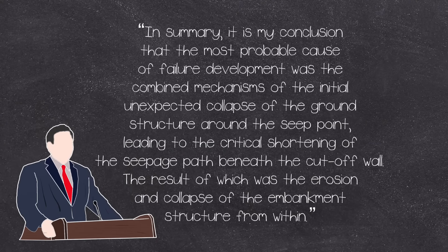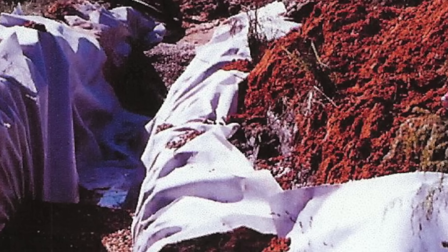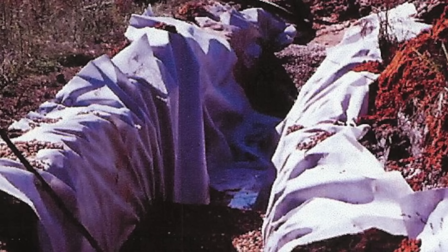In summary, it is my conclusion that the most probable cause of failure development was combined mechanisms of the initial unexpected collapse of the ground structure around the seep point, leading to the critical shortening of the seepage path beneath the cut-off wall, the result of which was the erosion and collapse of the embankment structure from within. This would hint that the structure did not have adequate drainage to allow seepage to safely leave the structure, thus being a design shortcoming.